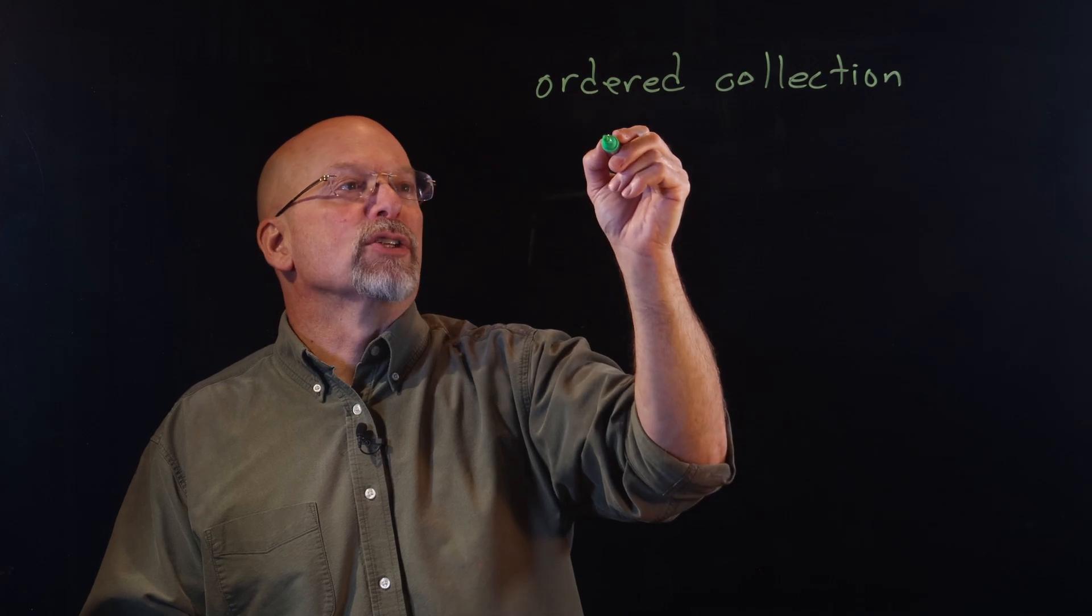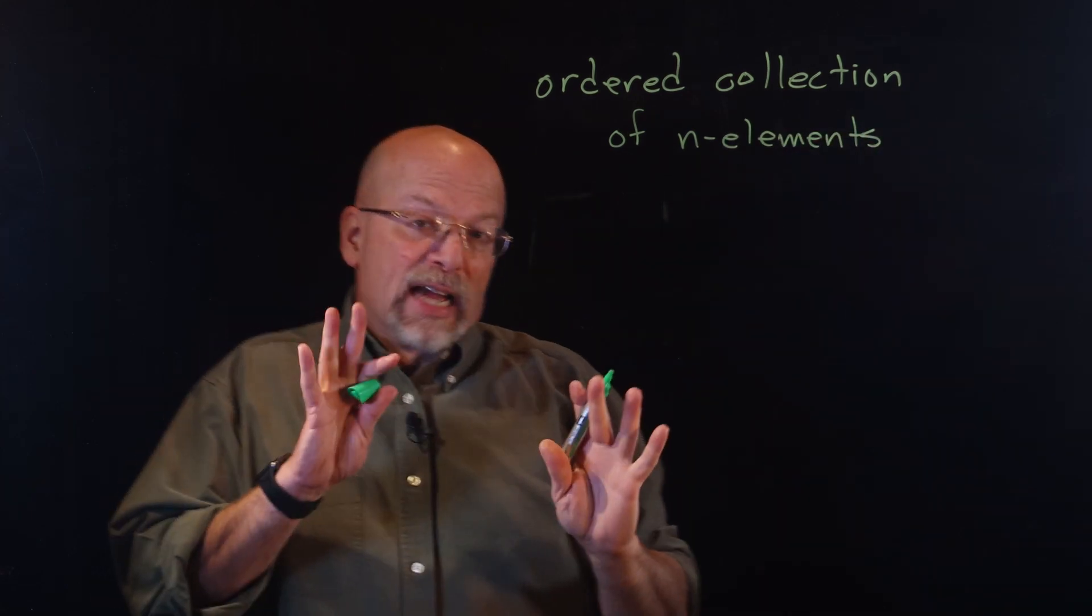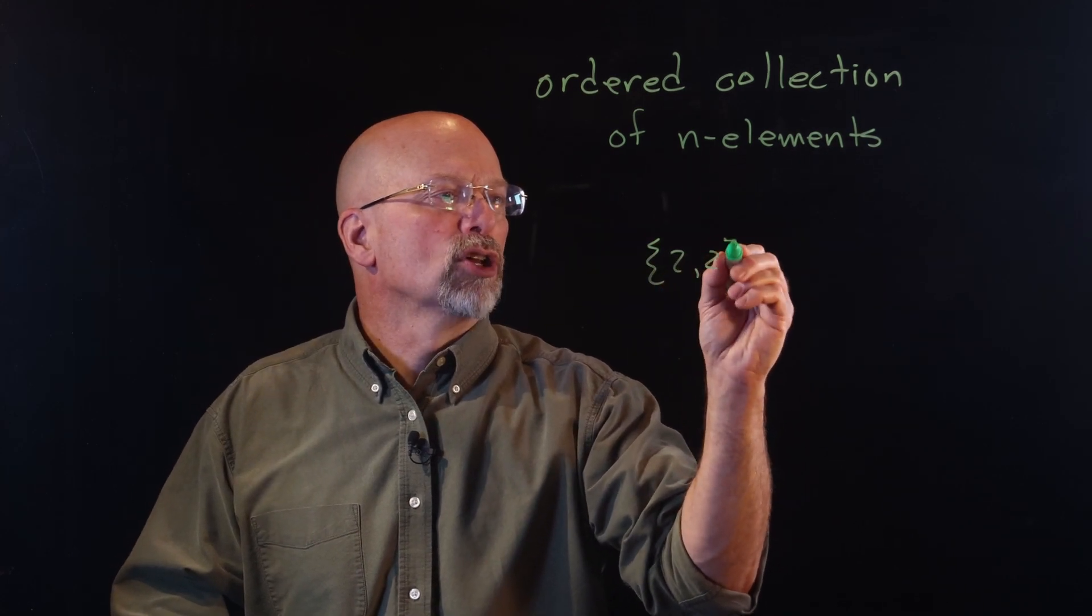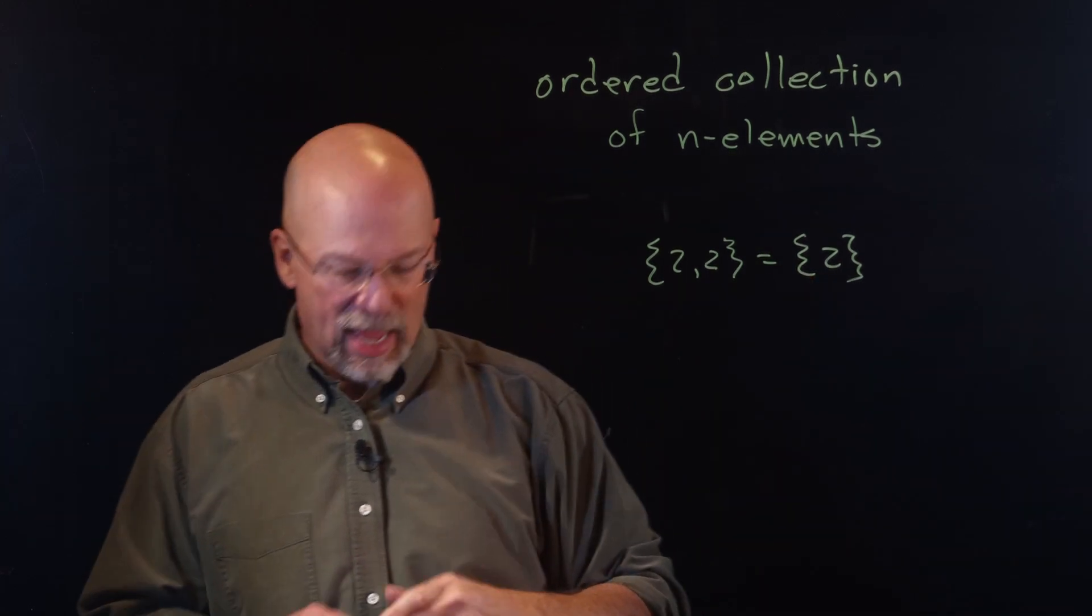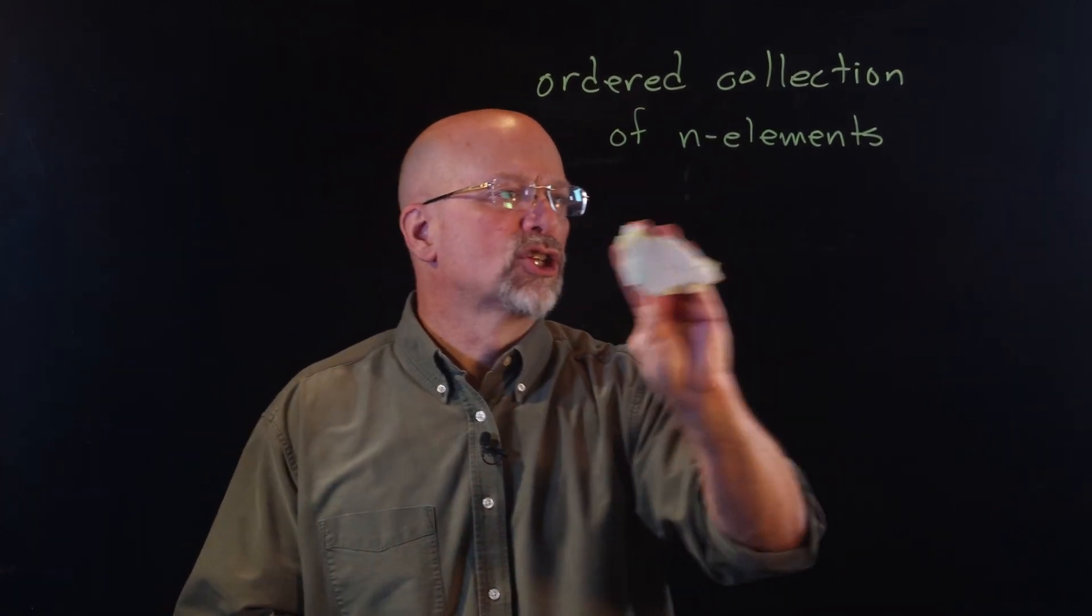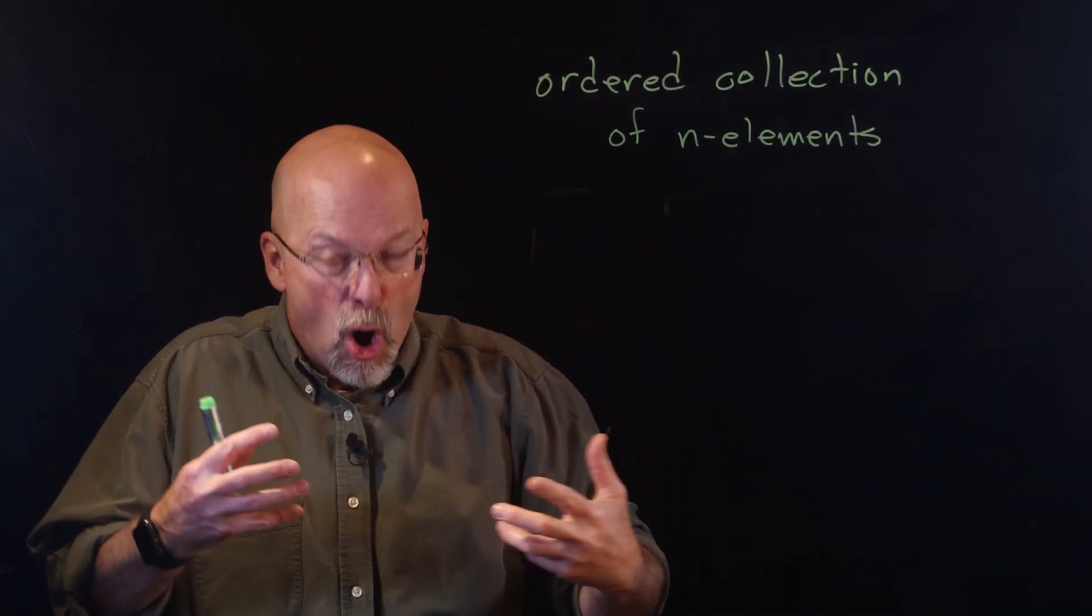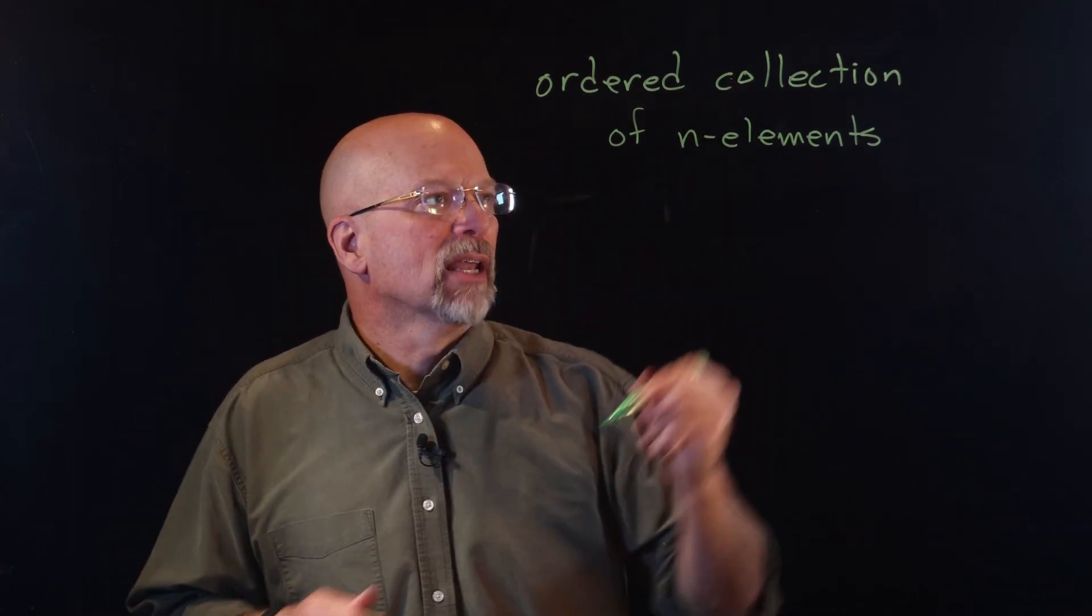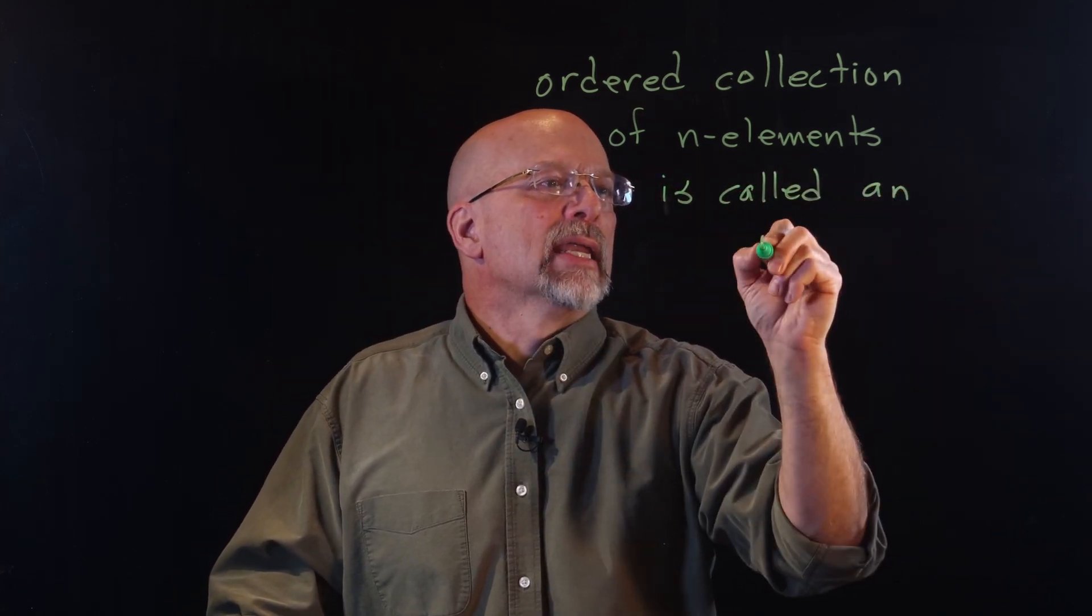Basically, what we have is an ordered collection of n elements. In fact, whenever we talked about sets, we talked about how the set {2, 2} is actually equal to the set {2}, right? Every element that is in this set is also in this set. Whenever we're talking about an ordered collection, however, this is not going to be the case. If I have two elements that repeat themselves in a specific order in this collection, that is part of the characteristic that defines this collection.